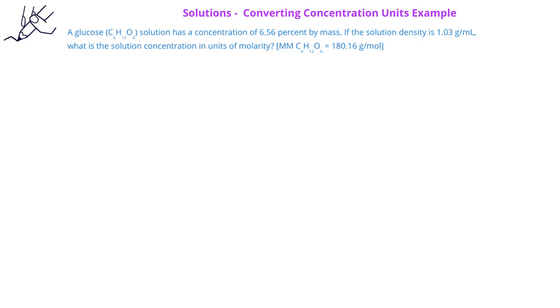As we discussed with our suggestions in the previous slides, we can convert the mass percent into 6.56 grams of glucose over 100 grams of solution. Since we're looking for molarity, we know that we need to get units of moles of glucose and liters of solution.